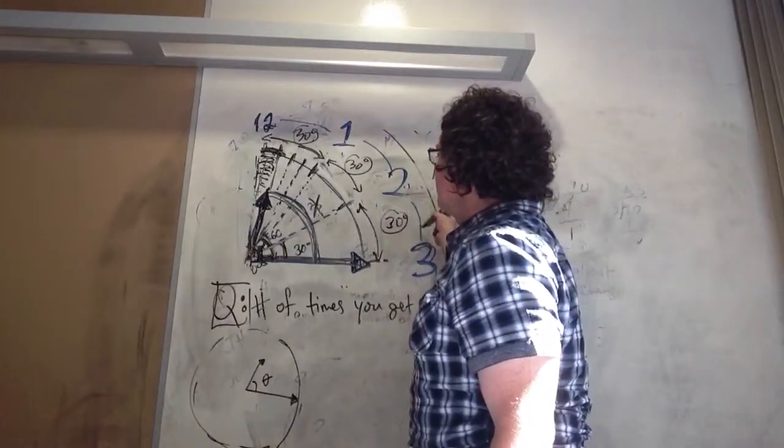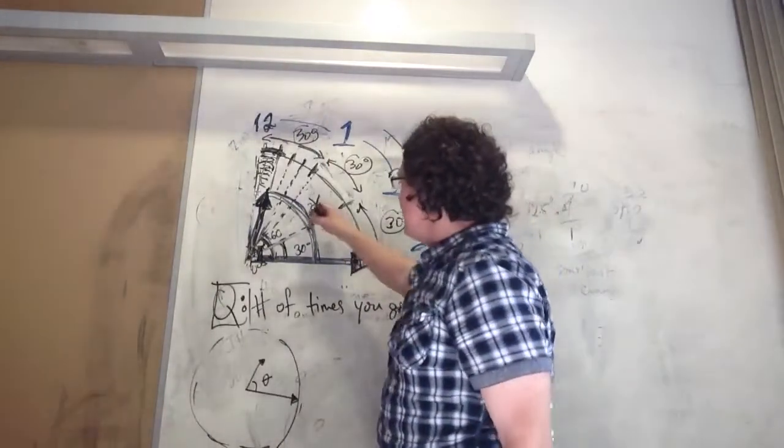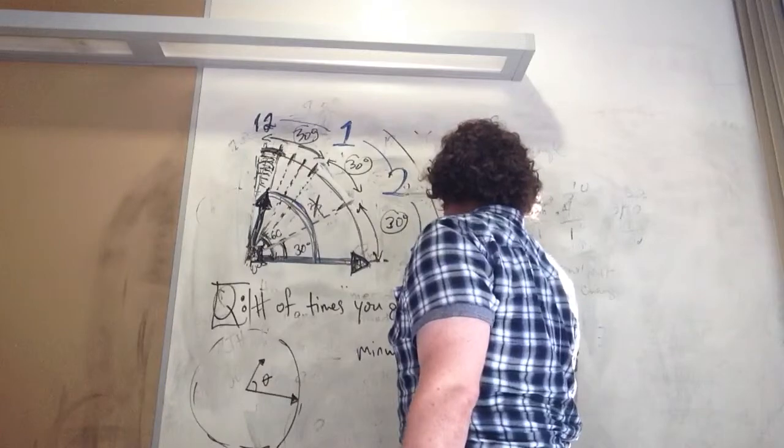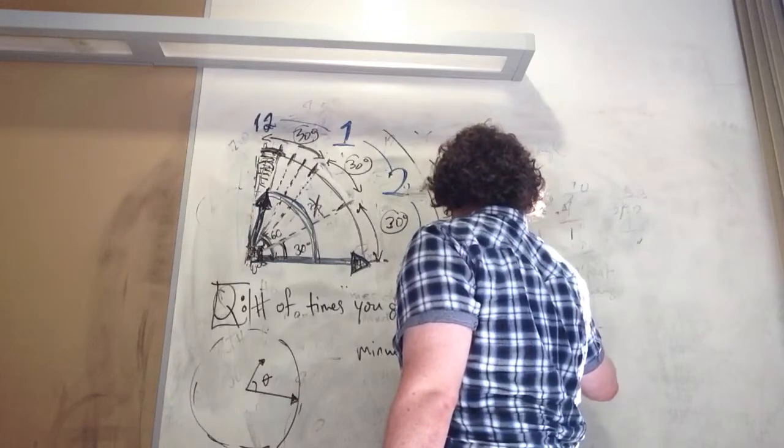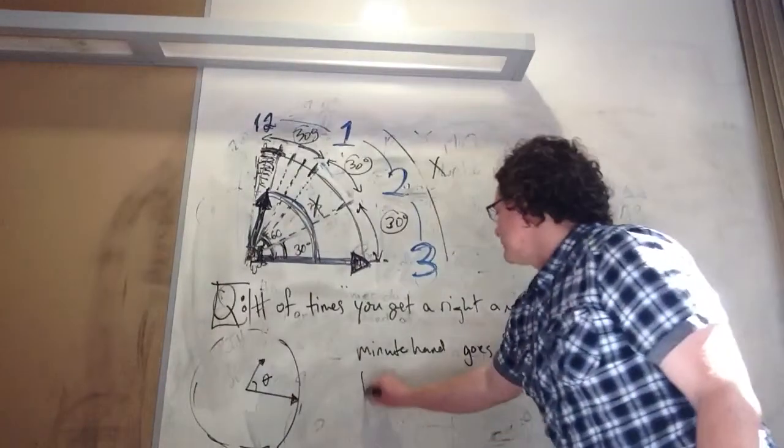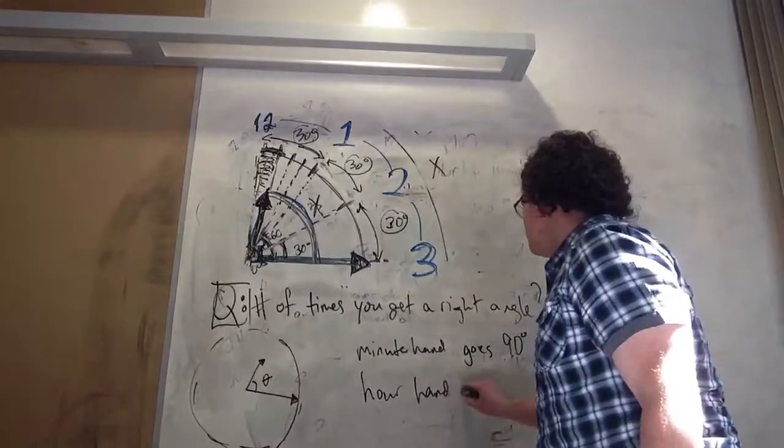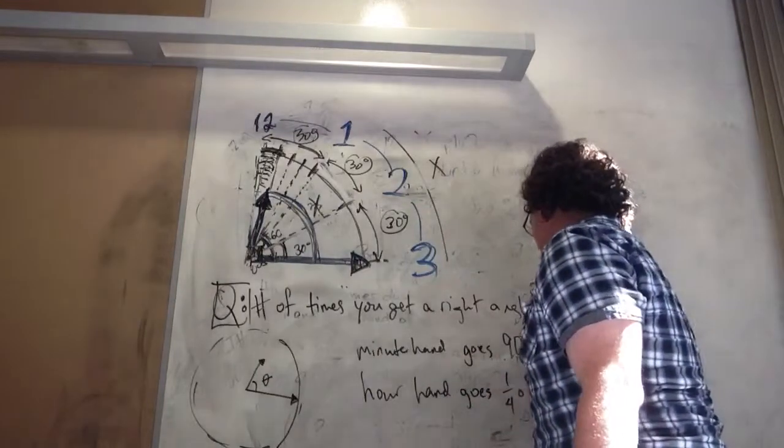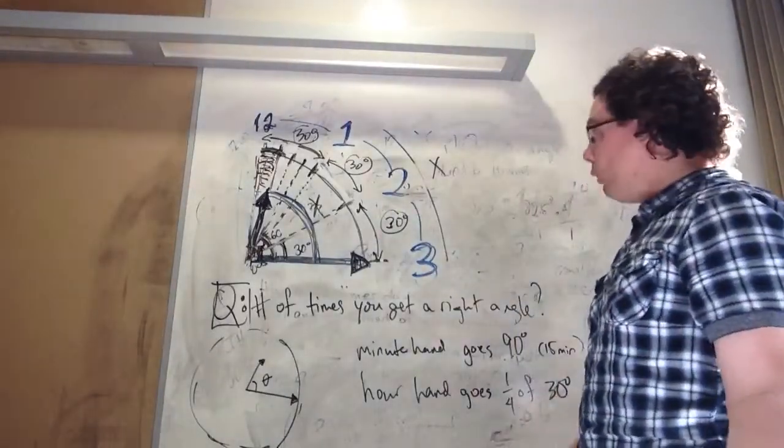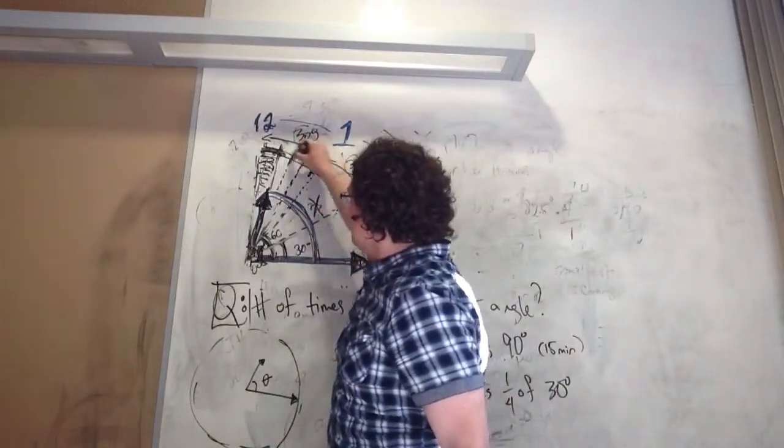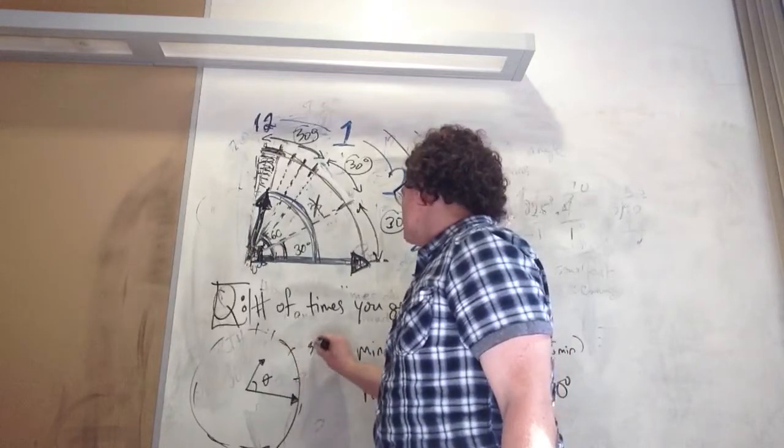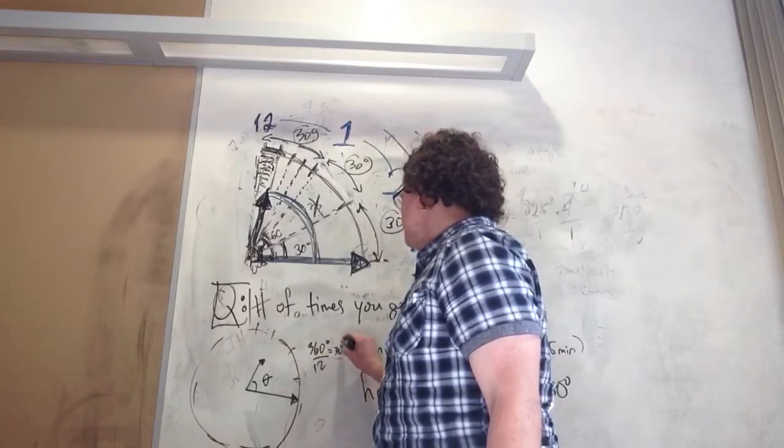And the way we did it was we said, in the time that the minute hand goes 90 degrees, which is 15 minutes, the hour hand goes a fourth of 30, because in one whole hour the hour hand will go 30 degrees. 360 degrees over 12 is 30 degrees.